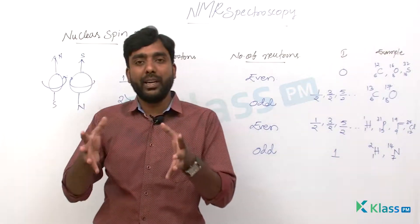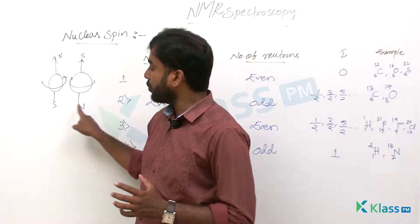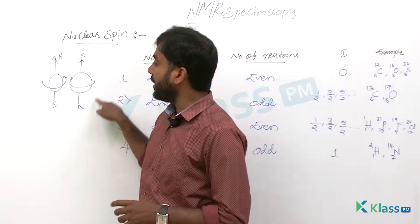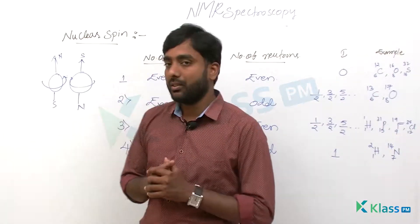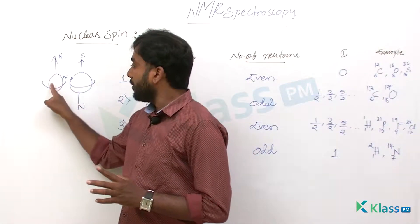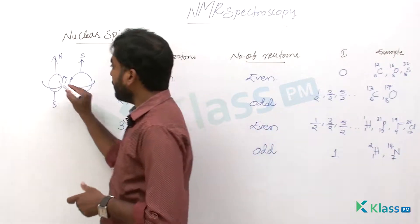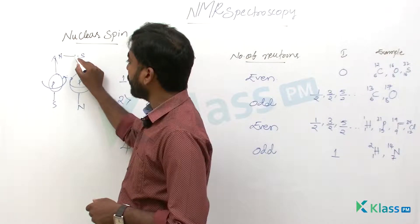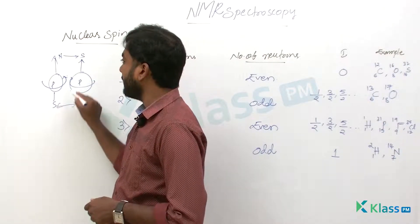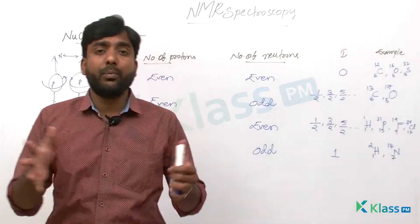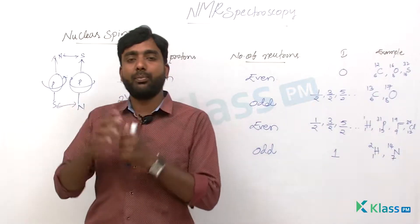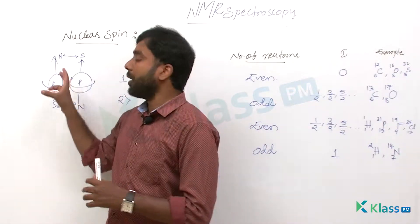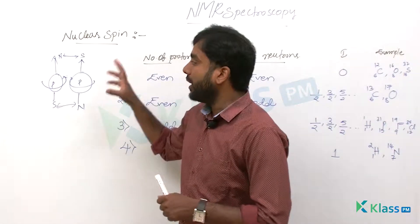When two protons have spin at the same position, the north and south poles attract each other. They come closer and the magnetic field of one proton and the magnetic field of the other cancel each other. Both protons are having a magnetic field, and the north of one proton and south of the other cancel each other. This is what happens when protons combine in even numbers — when proton pairing takes place, their magnetic fields cancel each other.